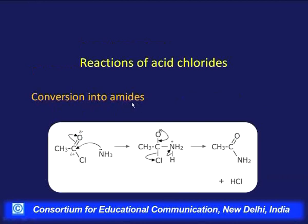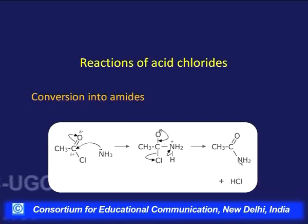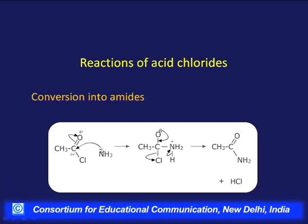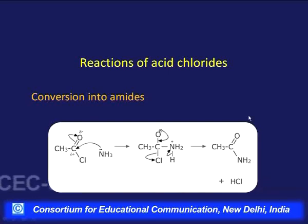Amides are obtained from acid chlorides when ammonia attacks the carbonyl carbon as a nucleophile: the electron pair goes to oxygen, then when it returns the Cl is lost along with one hydrogen, giving amides. The mechanism is the same for all nucleophilic substitutions — water for hydrolysis, alcohol or phenol for ester formation, and ammonia for amide formation — all displacing Cl.